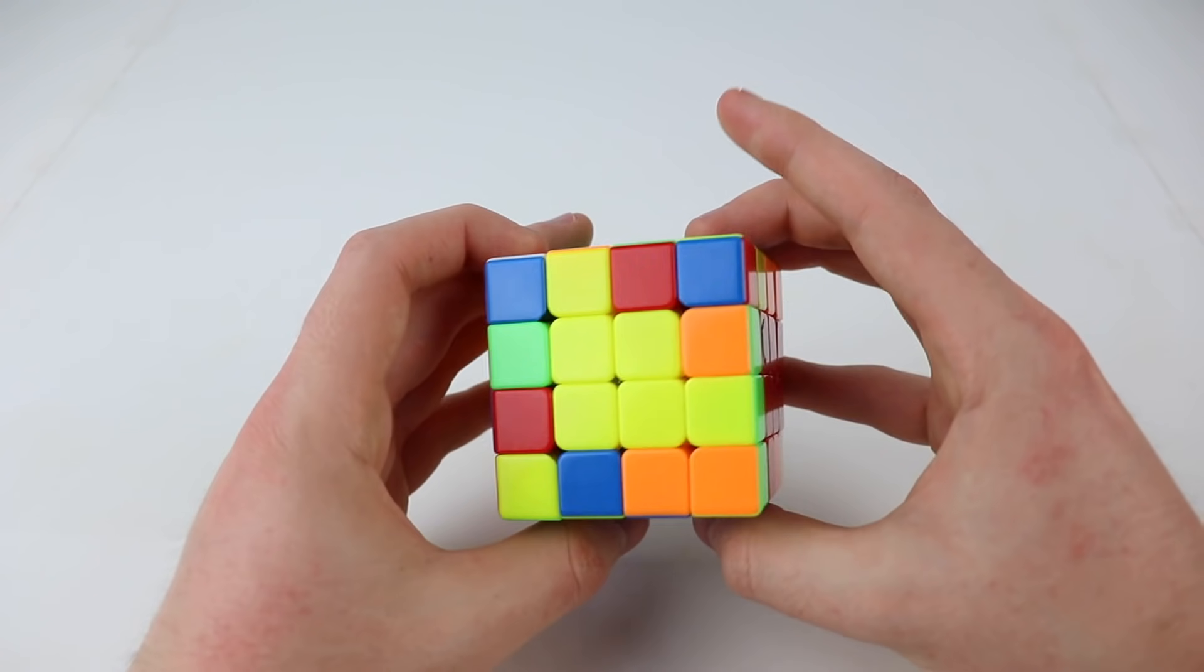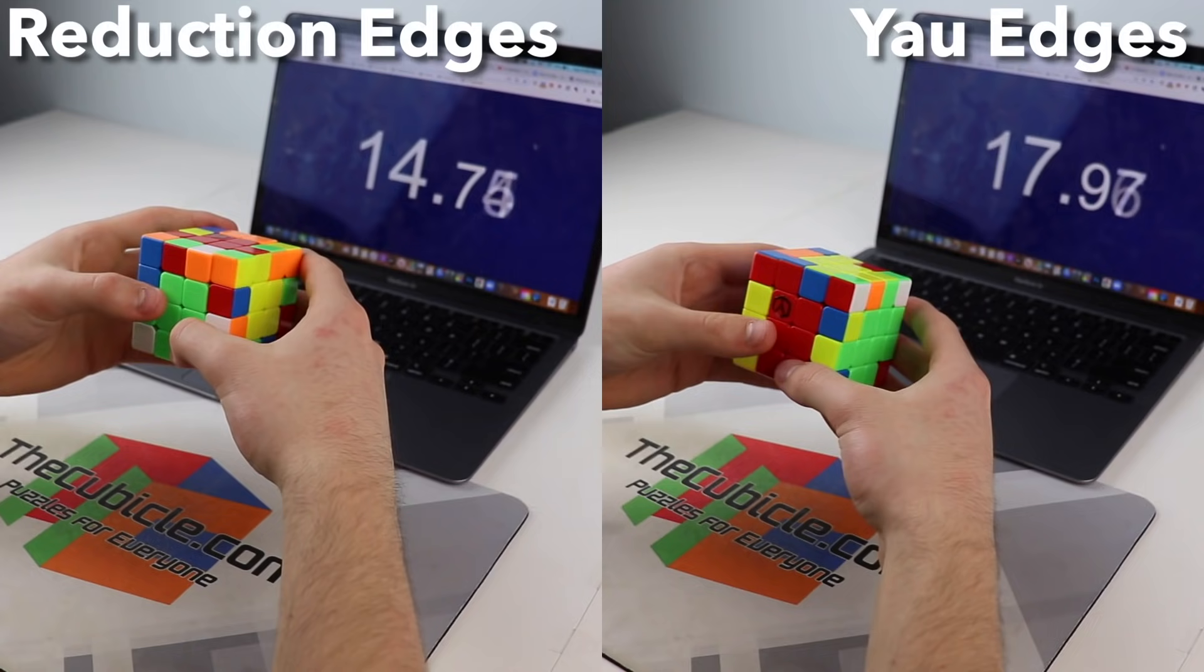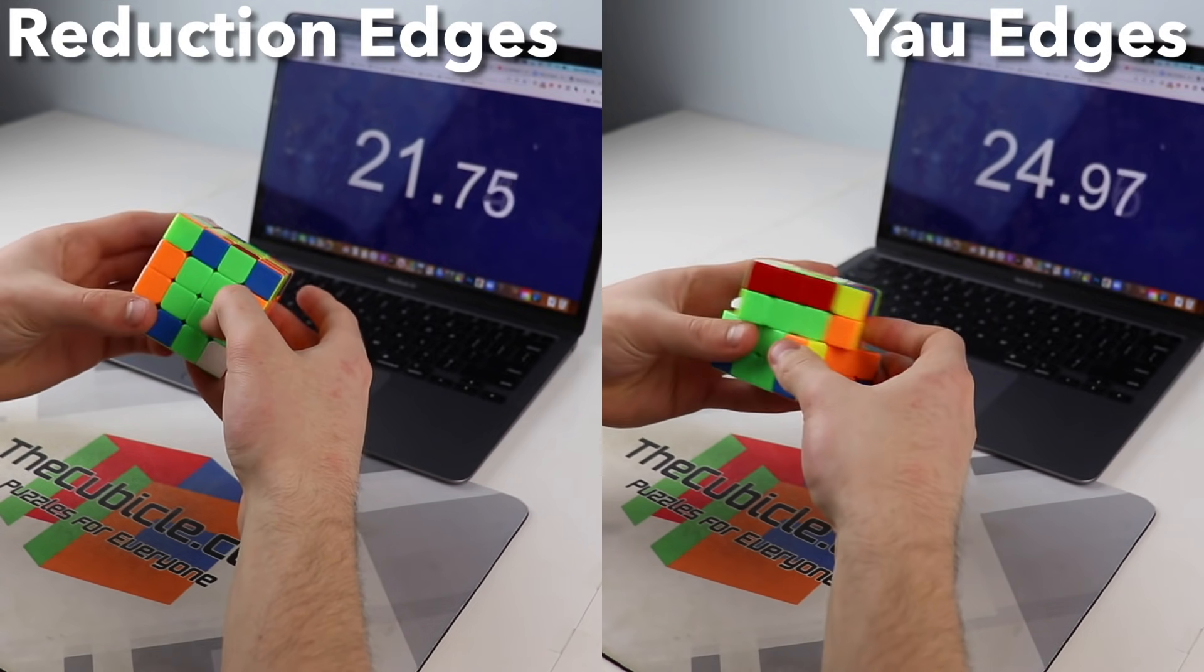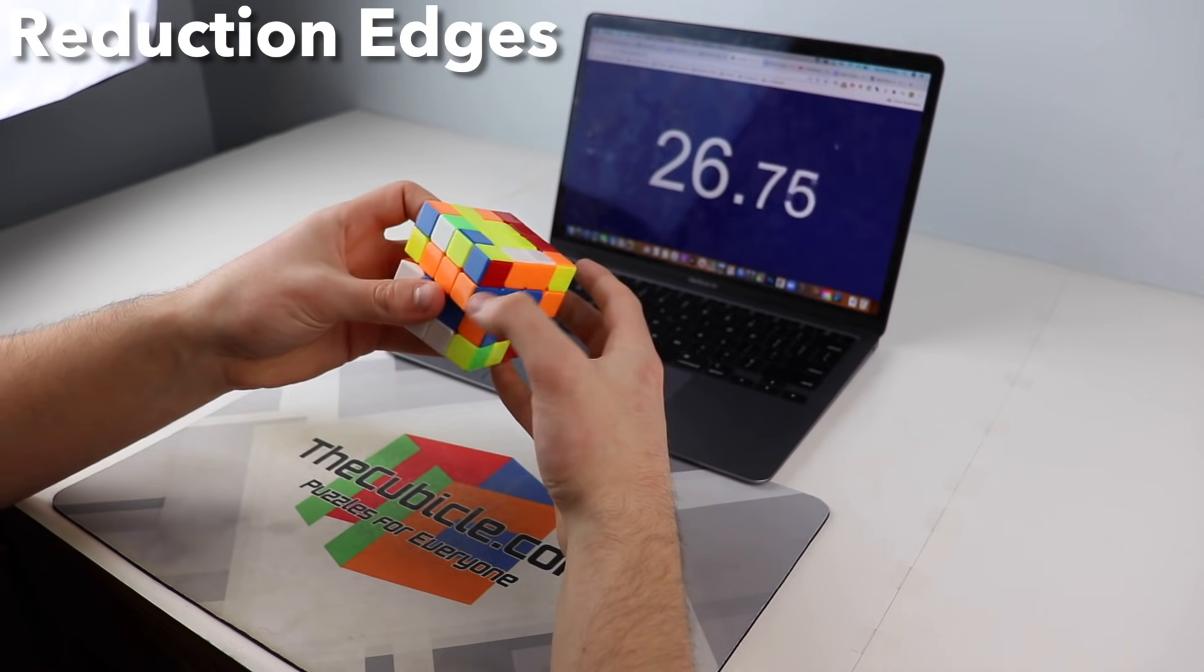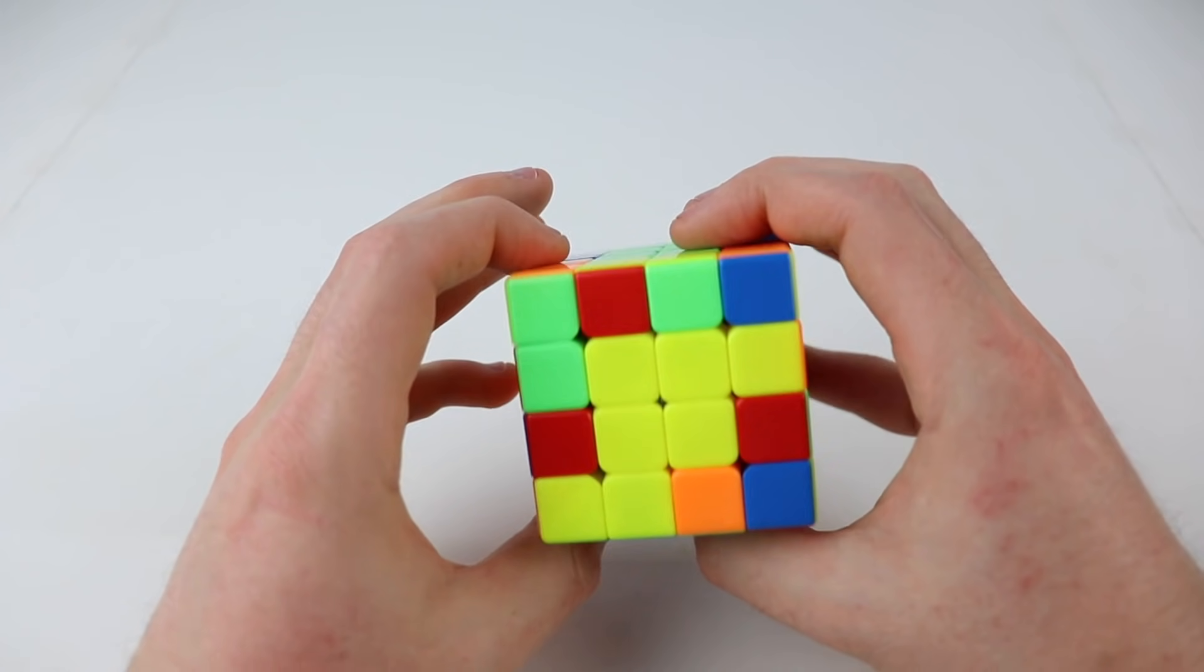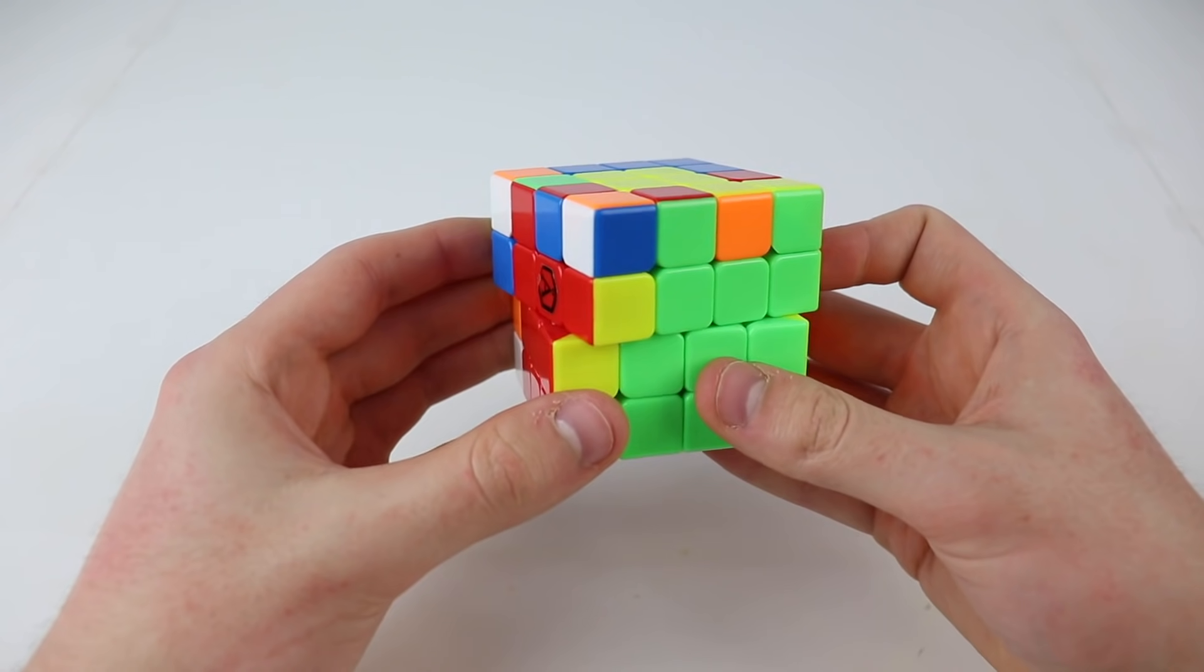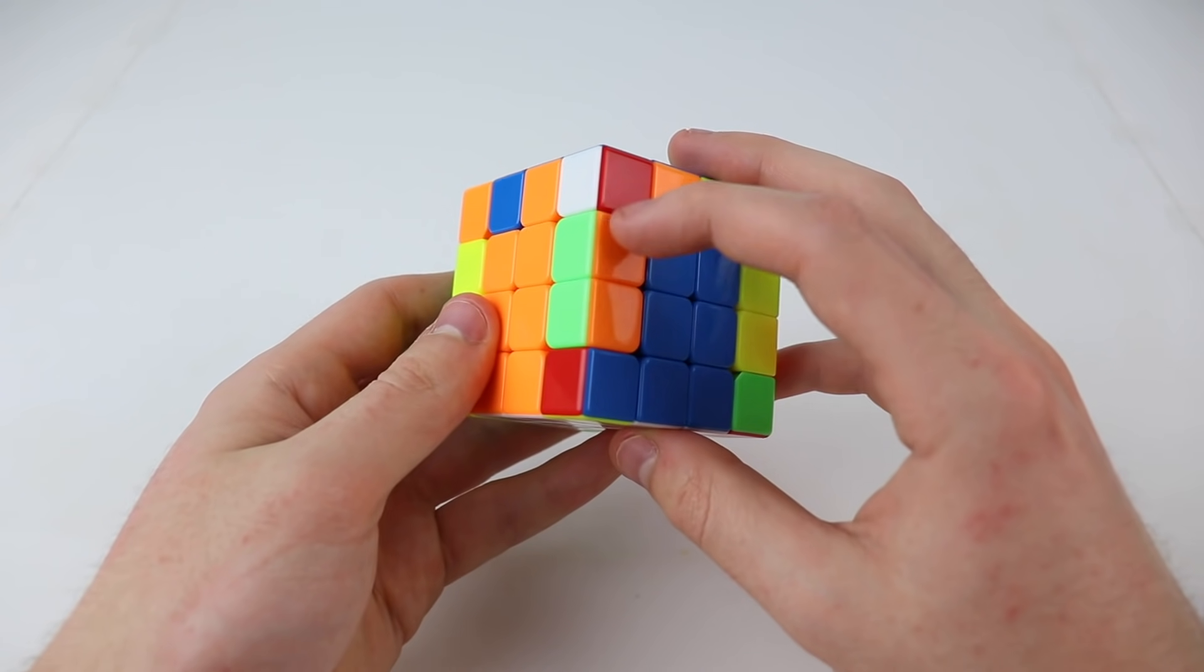Just like with the reduction method, we are now at the edge pairing stage, and this is where the Yao method saves a ton of time. Because you've already solved four edges and they're all on the bottom, you will never need to flip over the cube to look for edges. This lets you turn faster, find pieces more quickly, and pause less, all of which are huge time savers. In addition, it lets you use a technique called 3-2-3 edge pairing, which lets you solve two or even three edges at the same time. When you combine all of these time saving techniques, it's easy to see how top solvers can pair all of their edges in just a few seconds.